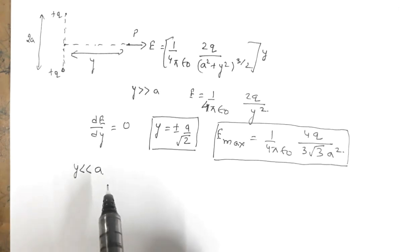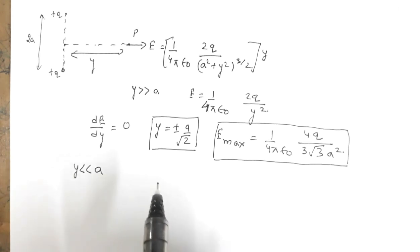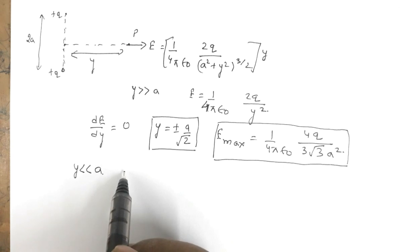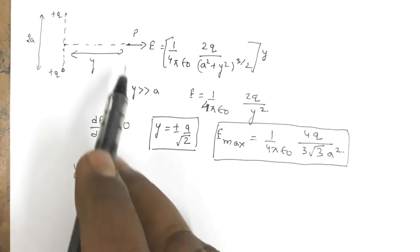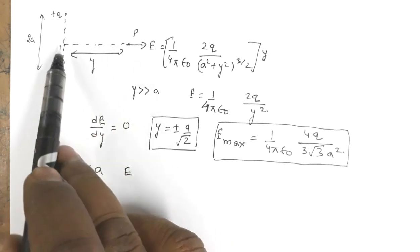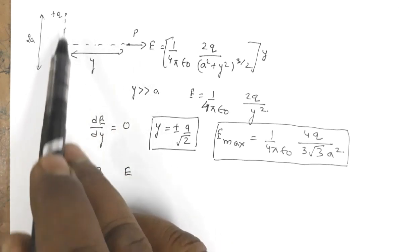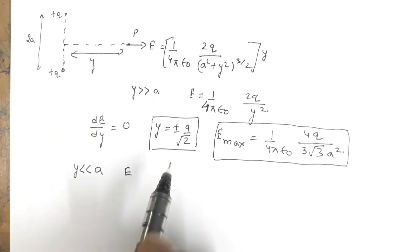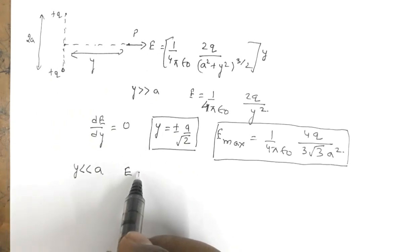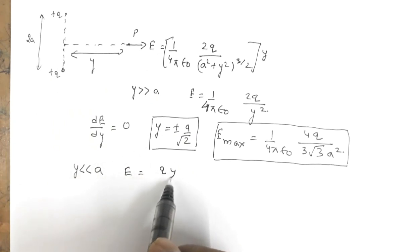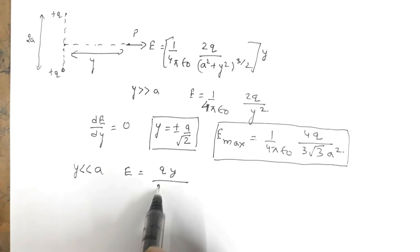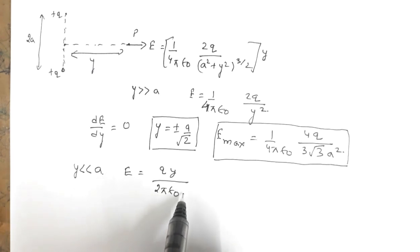...than a. In that case, when point P is very close to this line, the electric field expression is E = qy / (2πε₀a³).